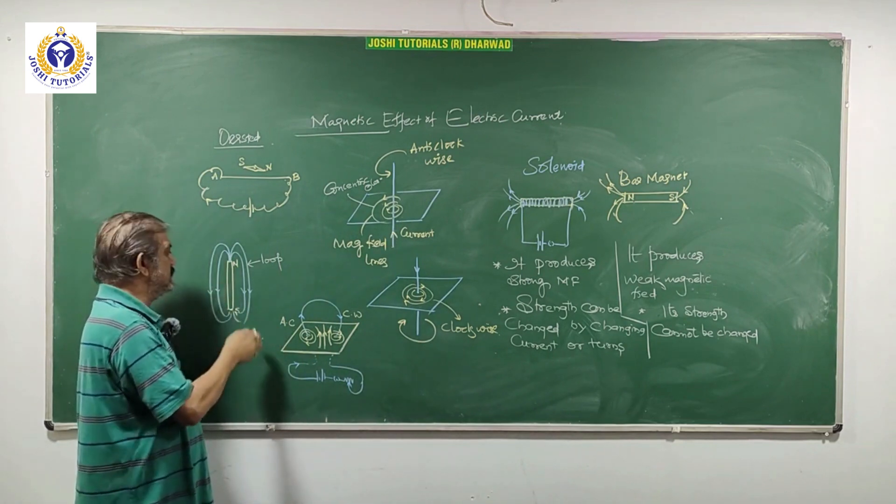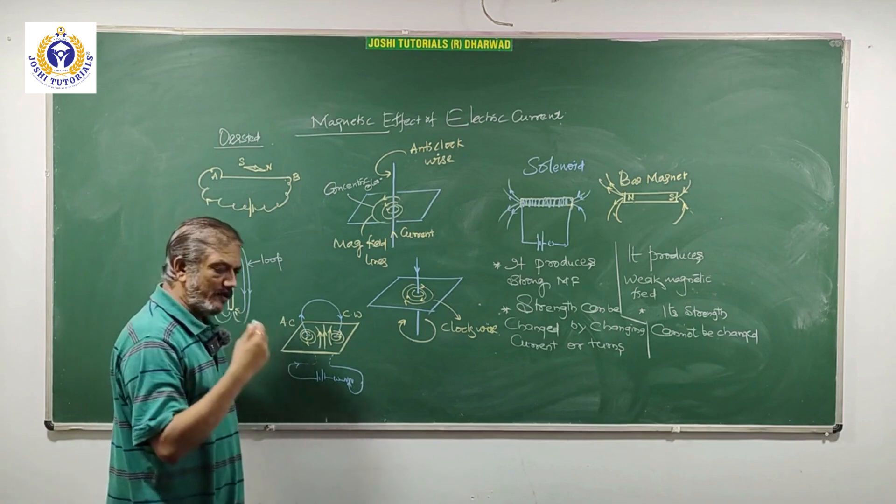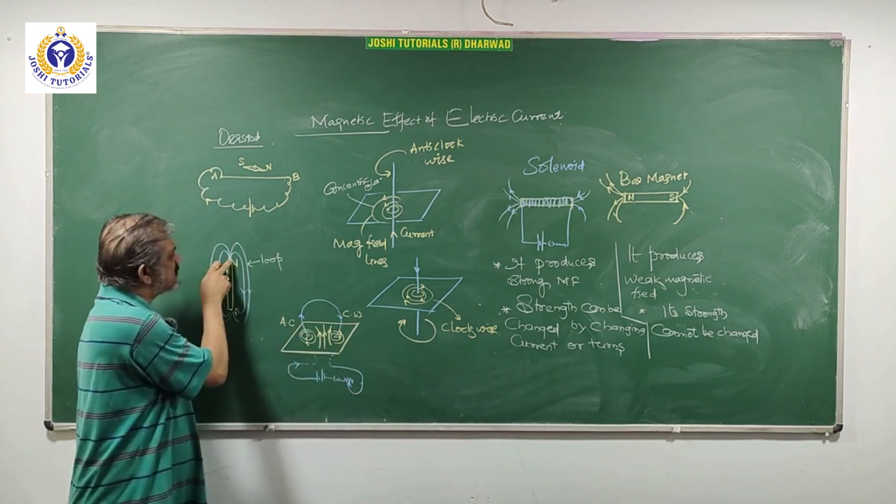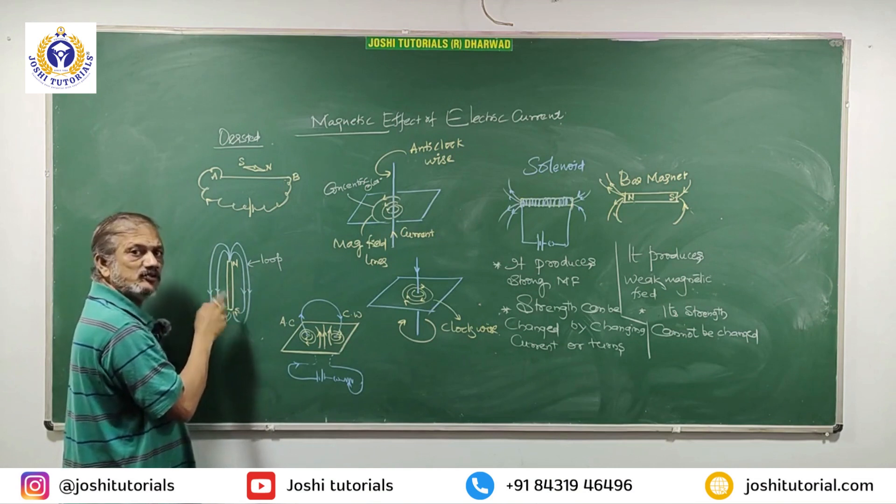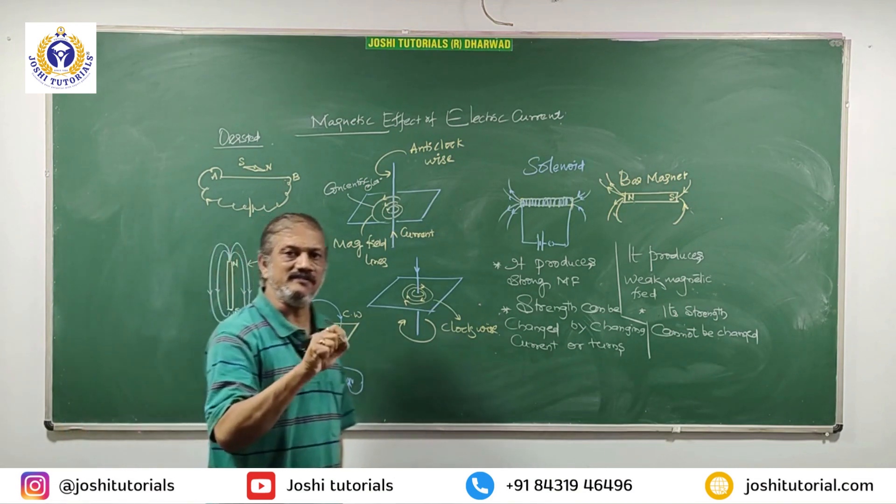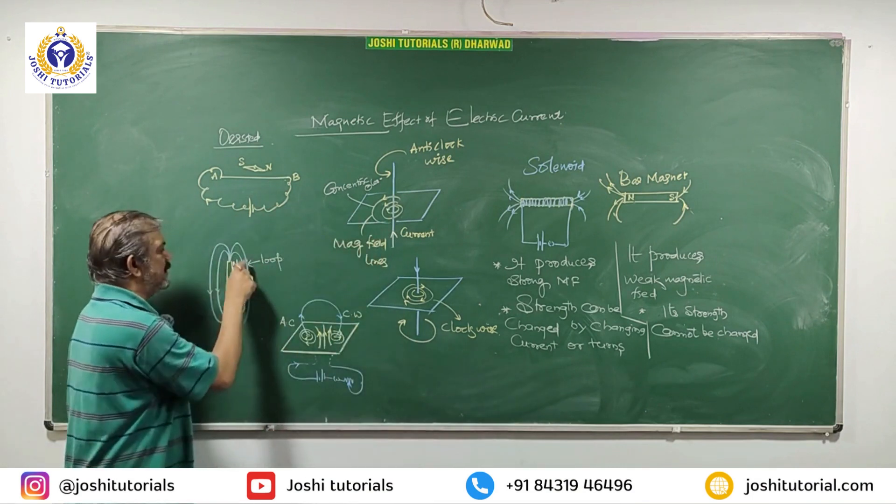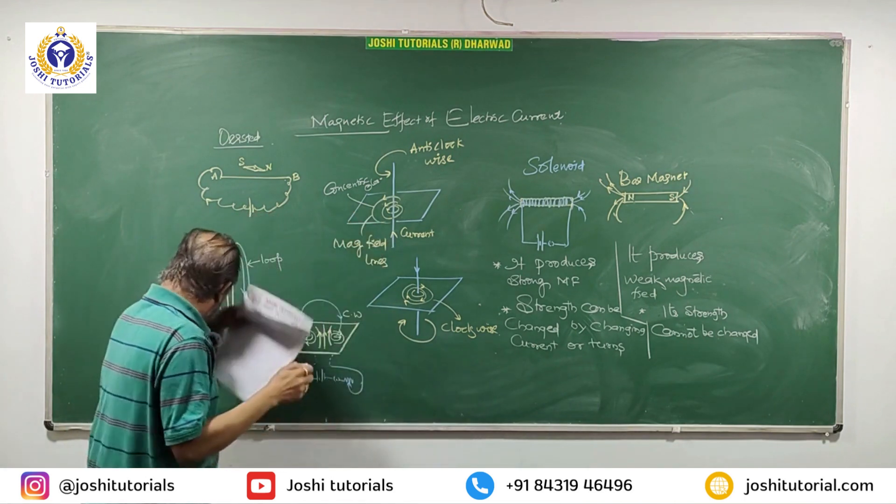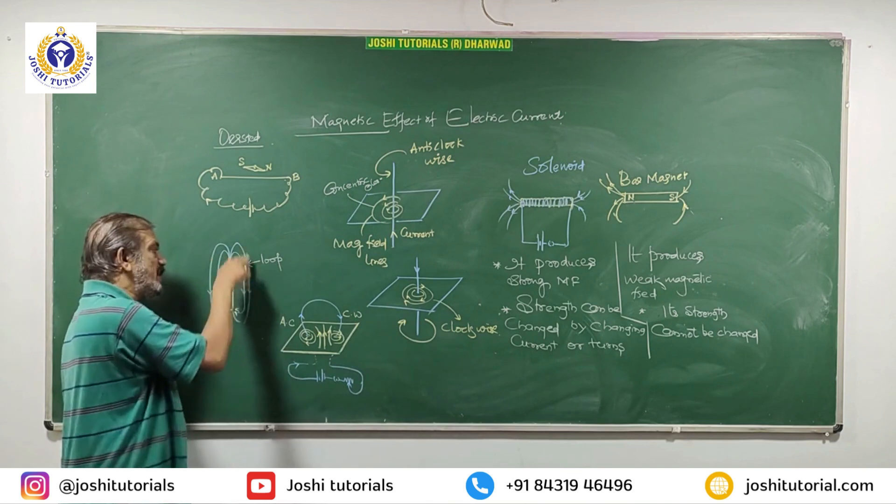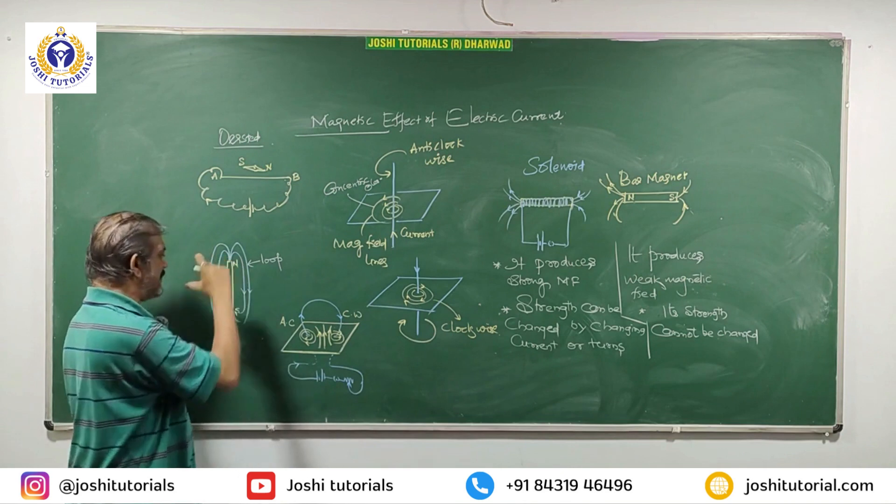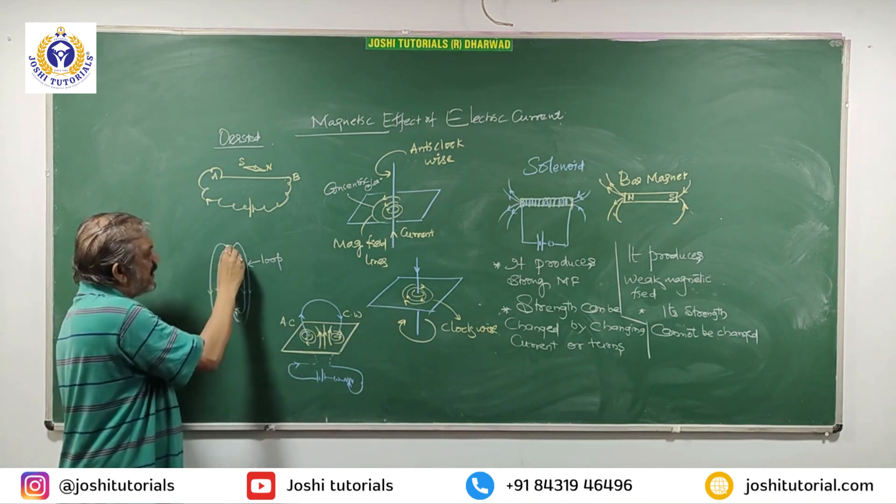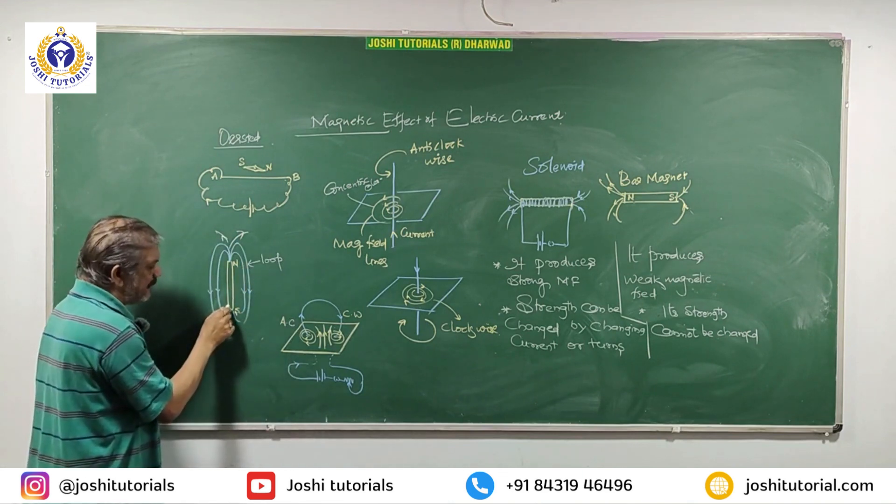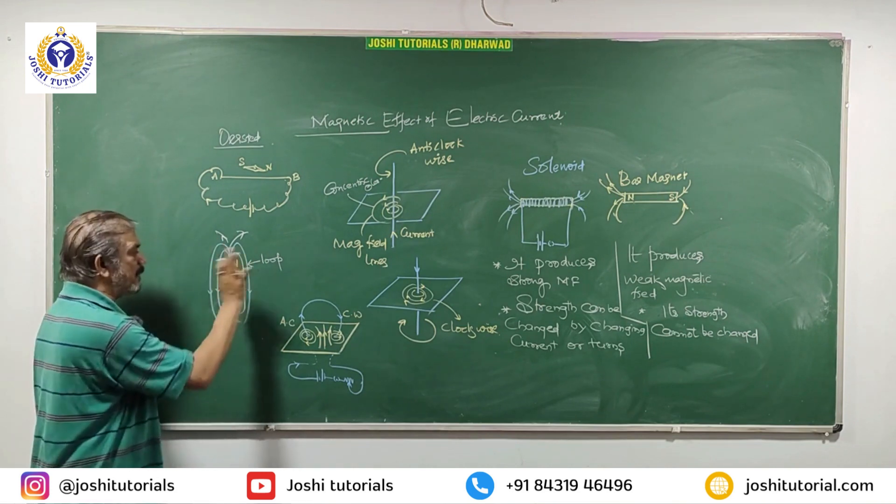If you take one magnet with North Pole and South Pole, usually we show North Pole by red color, South Pole by blue color. If you keep a compass, it starts turning towards South Pole. With the help of that, they have drawn some lines and points. When points are joined, you will get a loop. The shape is a loop around the magnet. These field lines originate from North, move towards South. Inside, they move from South to North. They never cross each other.